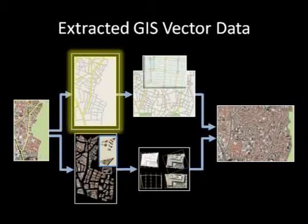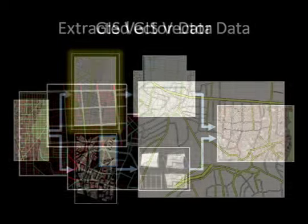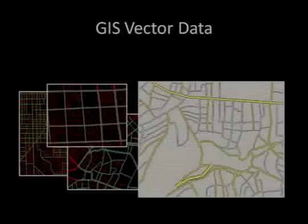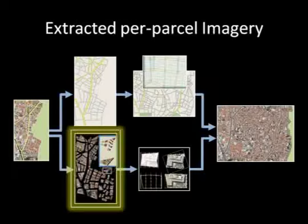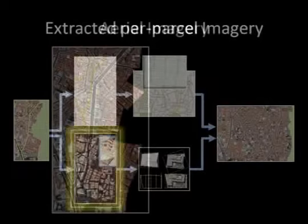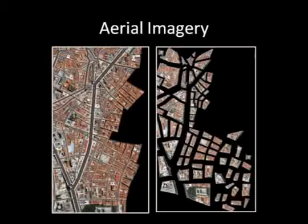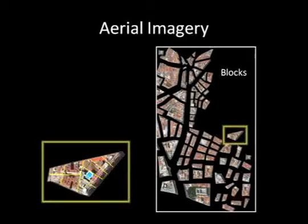We first extract the geometry of the streets and parcels from the input fragments for use in the structure-based synthesis of the new layout. Then we generate a collection of per-parcel aerial images for use in the image-based synthesis.